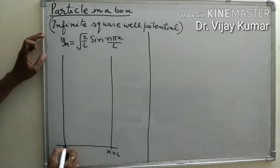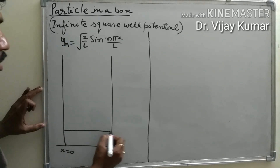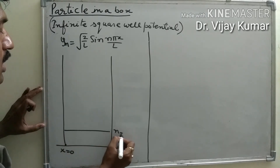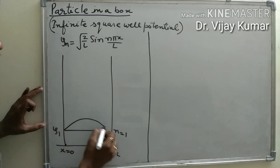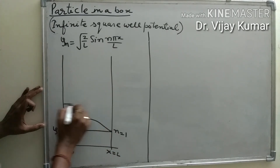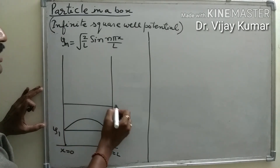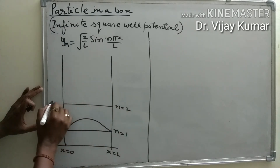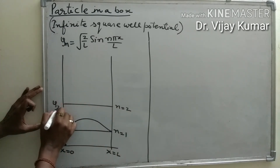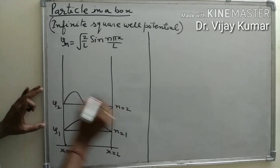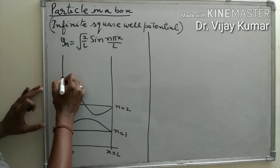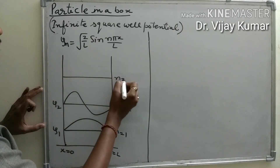These are the boundary conditions of the box. At first order, n = 1, the first wave function is represented like this. At second order, n = 2, the second wave function may be represented like this.